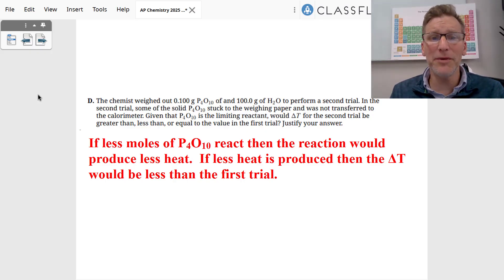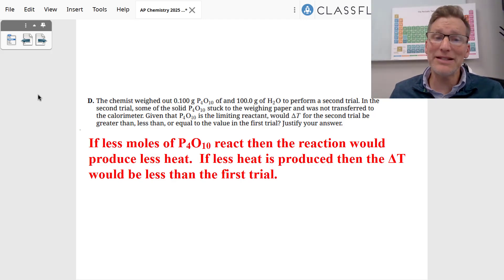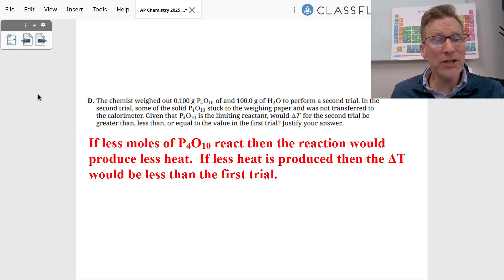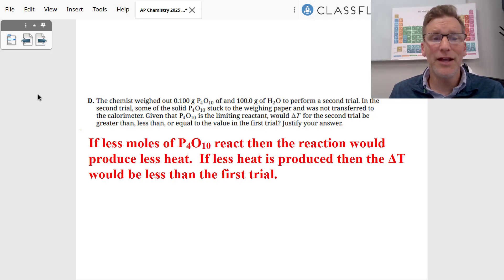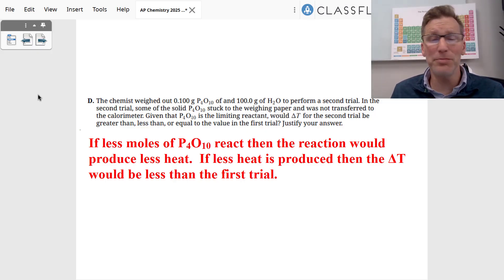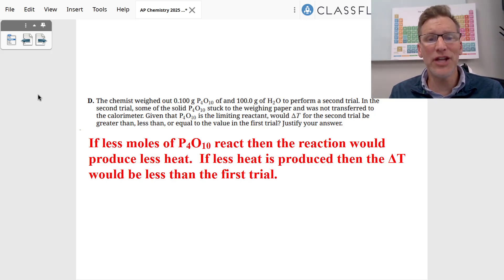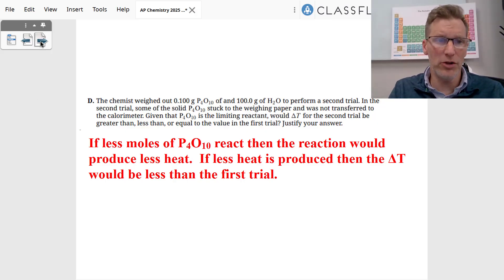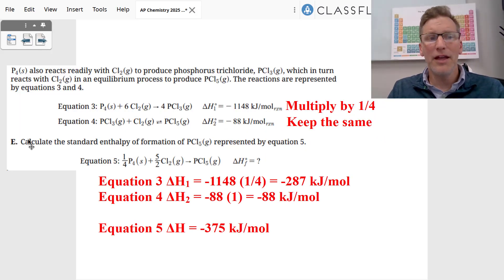The chemist weighed out more P4O10 but some stuck and wasn't transferred, meaning fewer moles of P4O10 were used. If fewer moles react, less heat is produced. Therefore, the change in temperature in the second trial would be less than in the first trial.